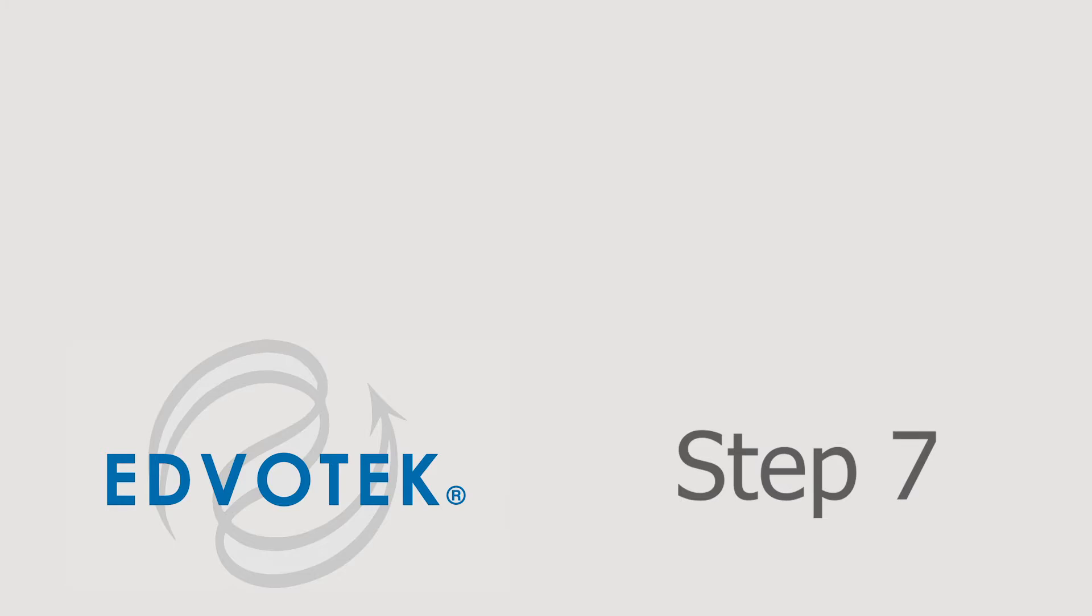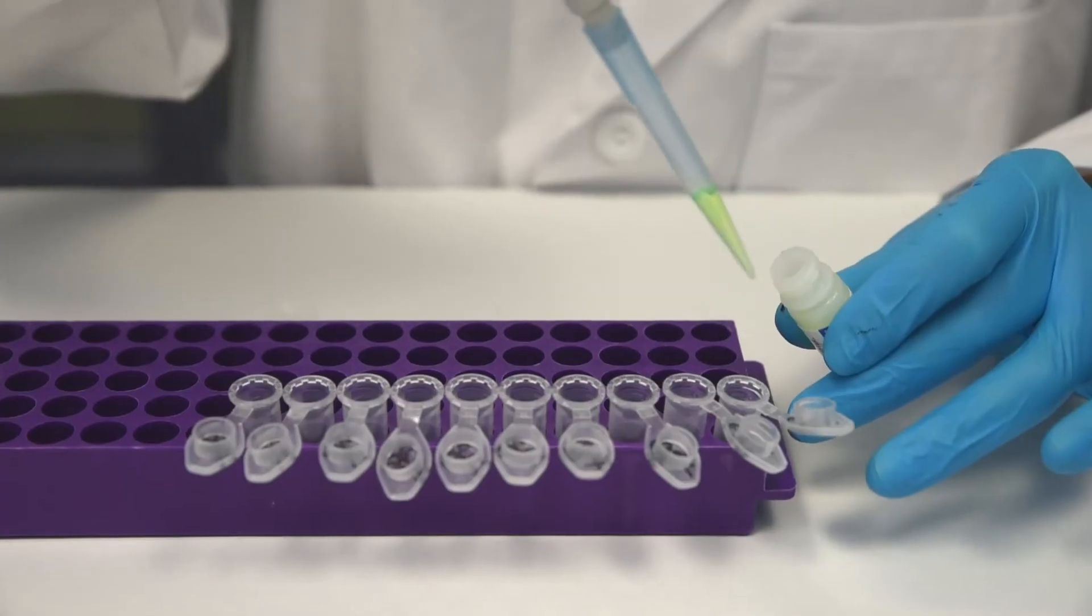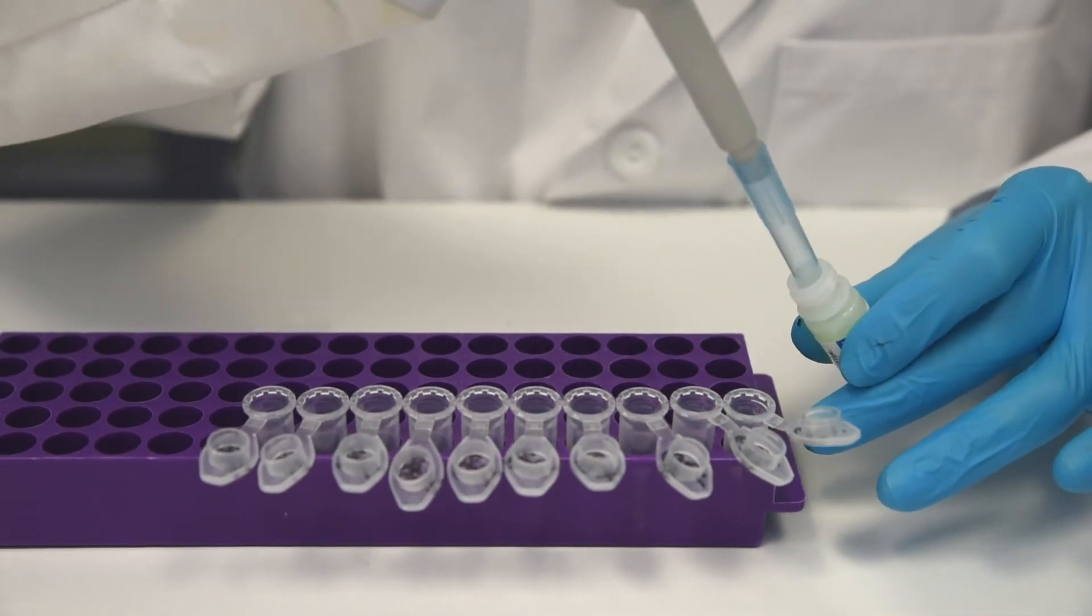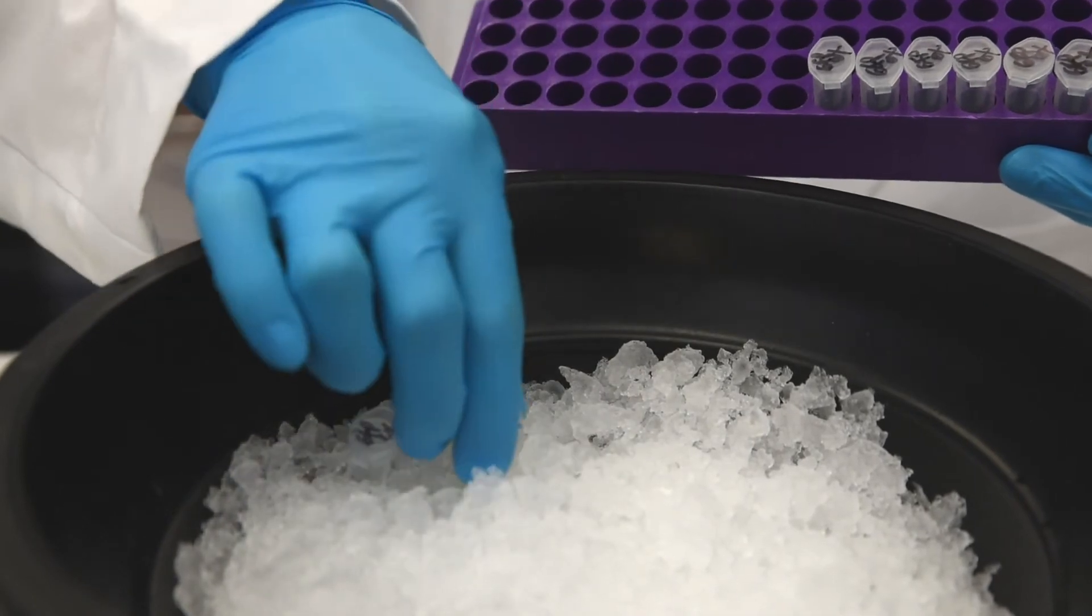Step 7: Label tubes with GFP Extract. Aliquot 220 microliters of the extract into the tubes. Place immediately back on ice.